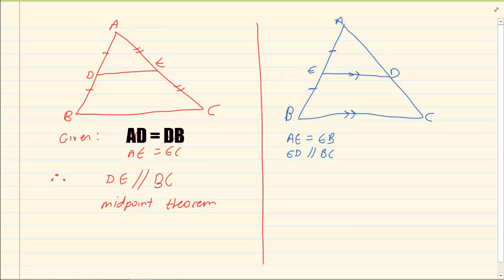Now after that, what do we decide? The deduction is that AD is equal to DC. So what you must remember is that if you are given any two of the items then the third one is accepted.